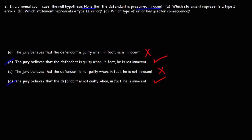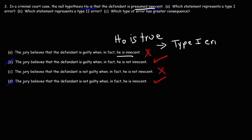Focusing on answer choice A: the jury believes the defendant is guilty when in fact he is innocent. H0 says he is innocent, so H0 is true. However, the jury rejects H0 when it is true — they believe he is guilty when he is innocent. Therefore, this is a type 1 error. Answer choice C disagrees with H0, meaning H0 is false — he is not innocent. But the jury believes he is not guilty, so they fail to reject the false null hypothesis. This is a type 2 error.